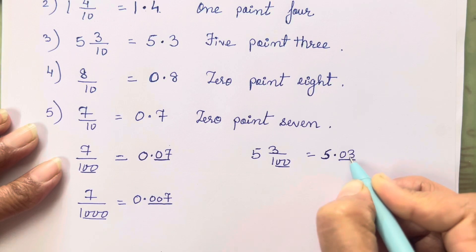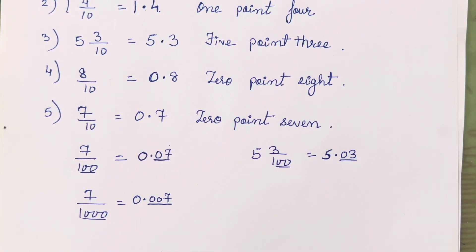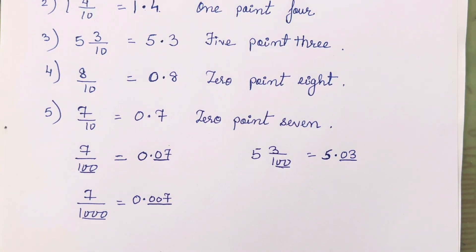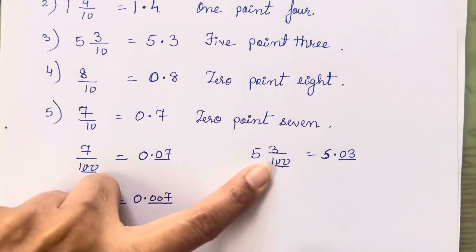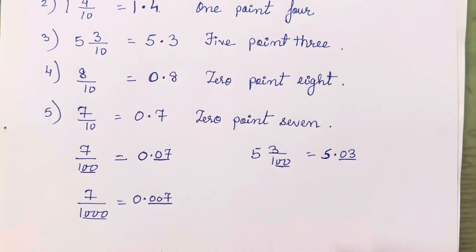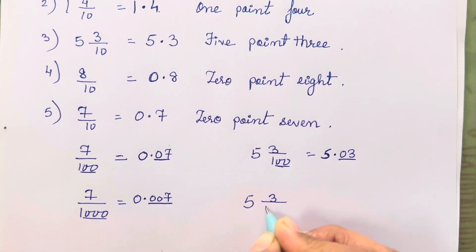So we write 0 and 3 after the decimal point — giving us 5.03. That is the conversion of a mixed fraction into a decimal when there is 100 in the denominator. Got it? Got the difference? This was for 10s, and this is for 100. Now for 1000, I am going to show you with the same example.